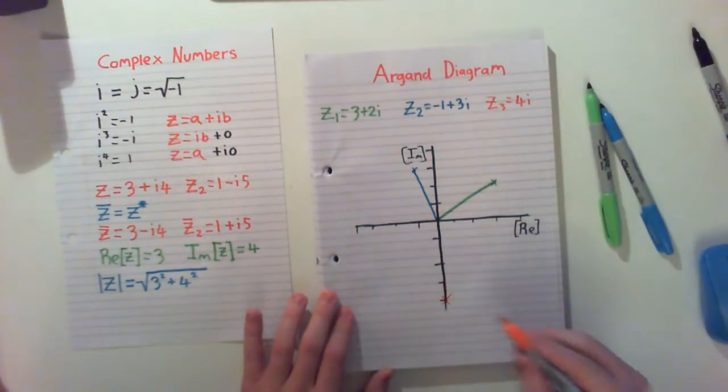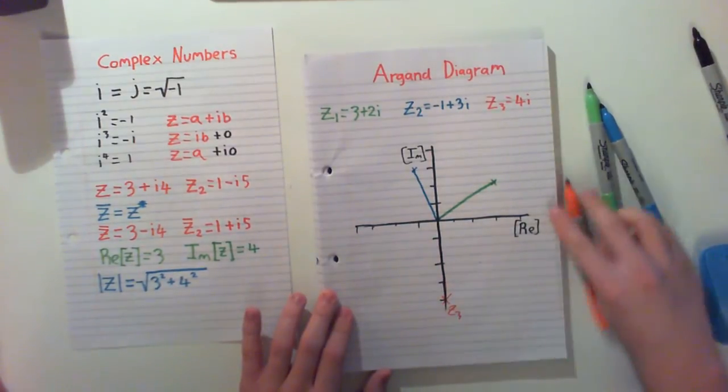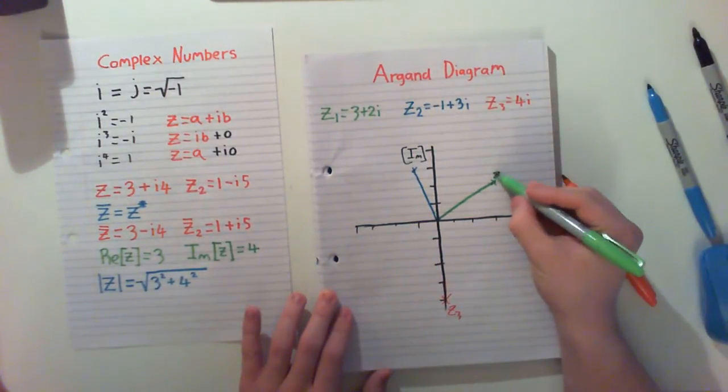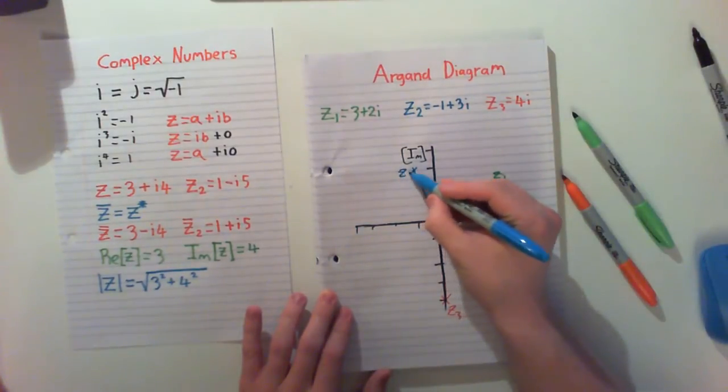So there are our points: Z3, Z1, and Z2.